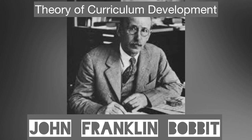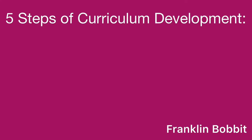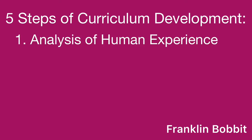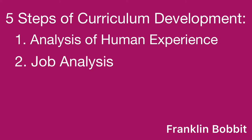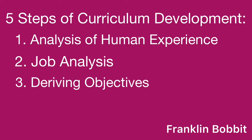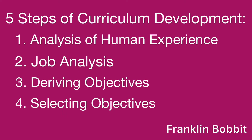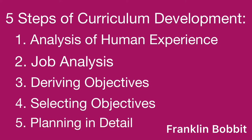Bobbitt developed a theory of curriculum development and formulated five steps in curriculum making. Step one dealt with separating the broad range of human experience into major fields. Step two was to break down the fields into their more specific activities. The third step was to derive the objectives of education from statements of the abilities required to perform the activities. The fourth step was to select from the list of objectives those which were to serve as the basis for planning pupil activities.